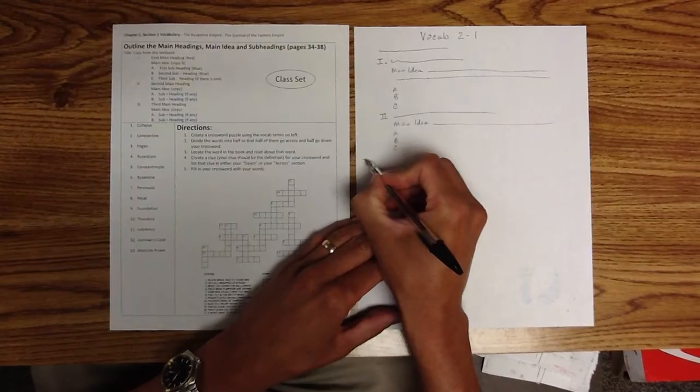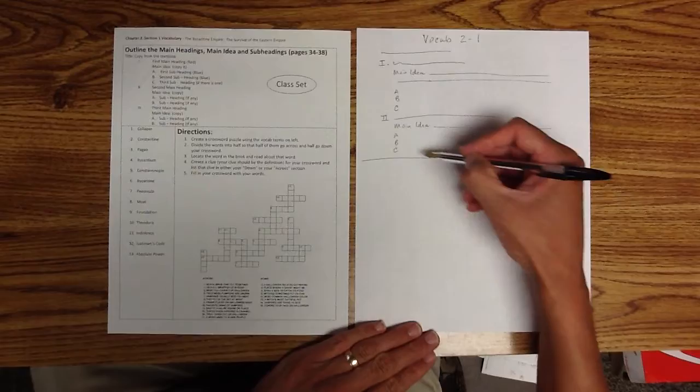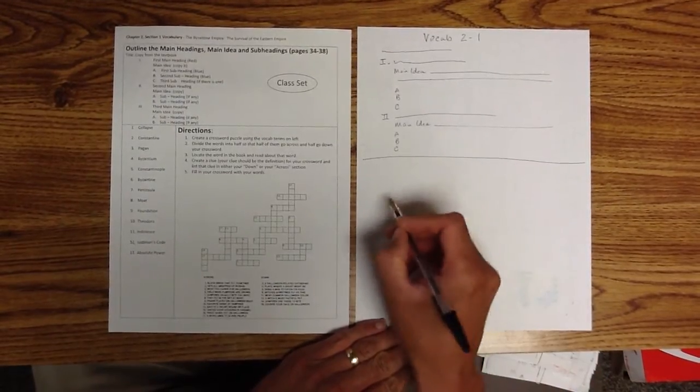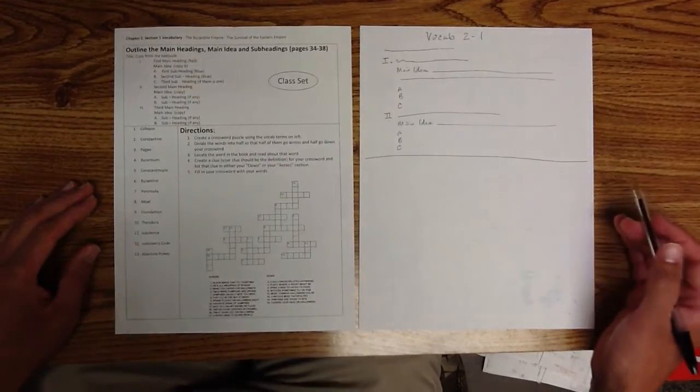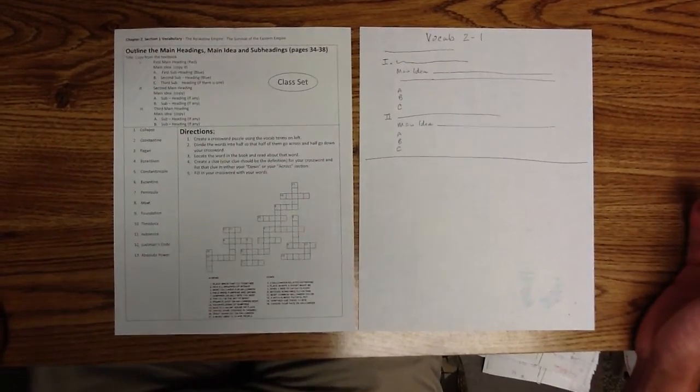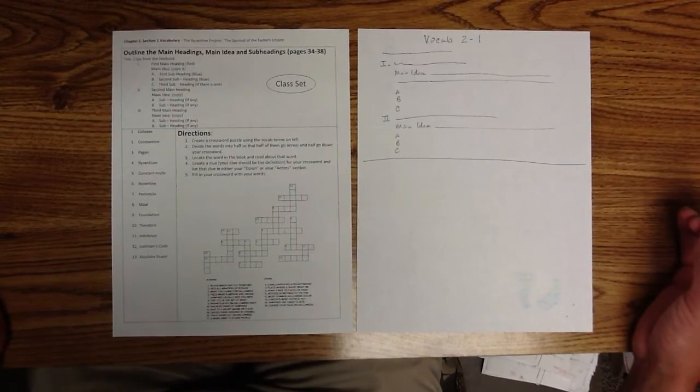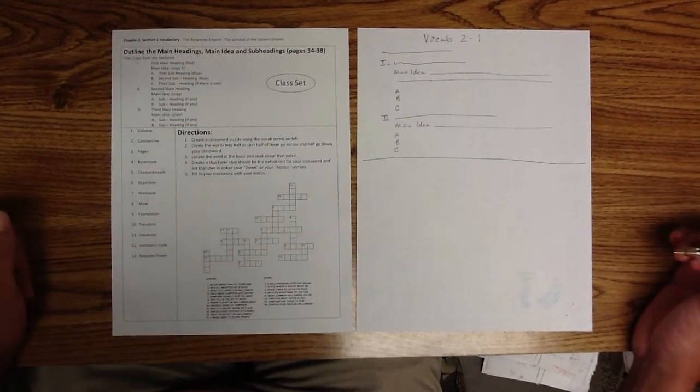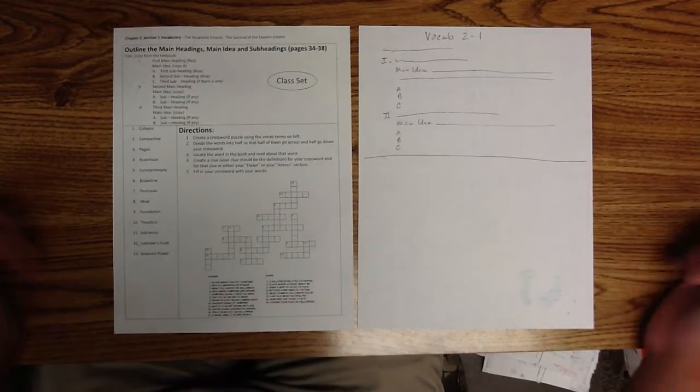Then you'll draw your line across like you normally would, but this time we're not going to create our line down here and list our words on the left. What we're going to do is we're going to create your own crossword puzzle. No, you cannot go onto the computer and find a crossword puzzle maker website, print that thing out, and then paste it on here. I want you to make your own. It won't be that hard for you.